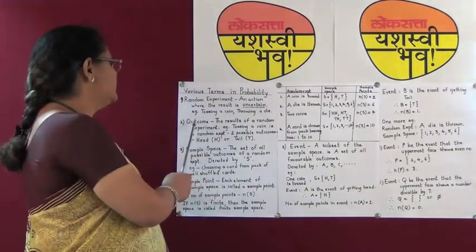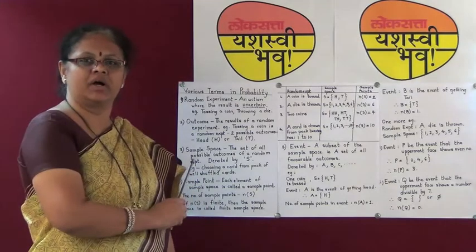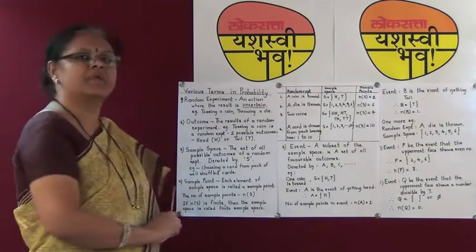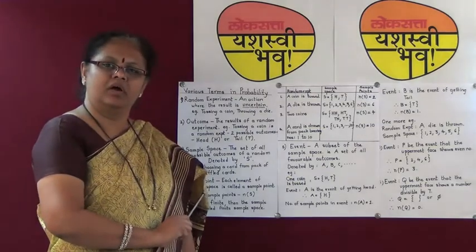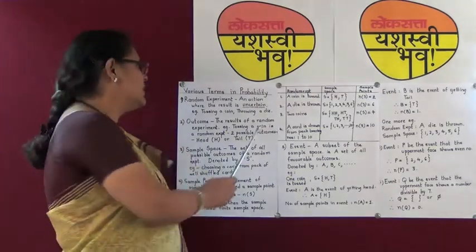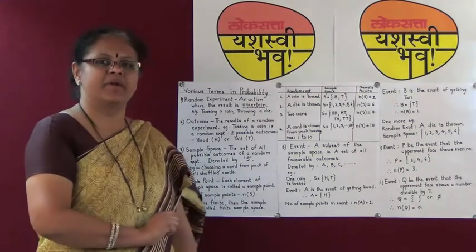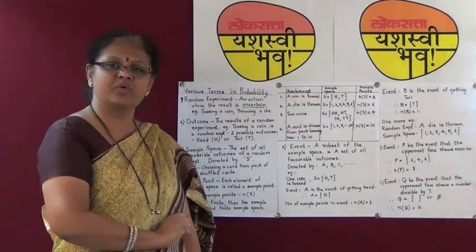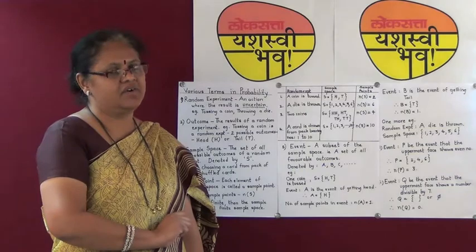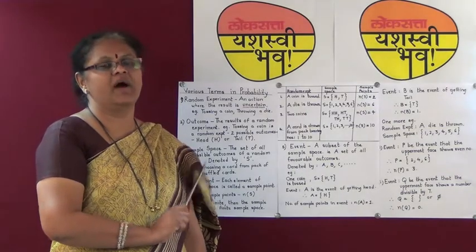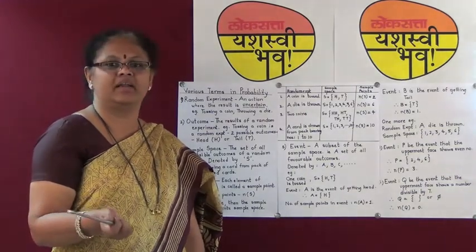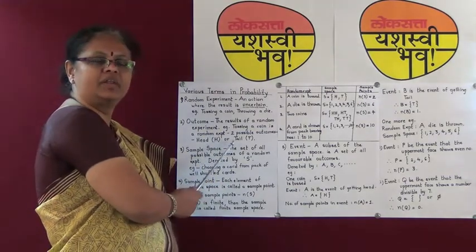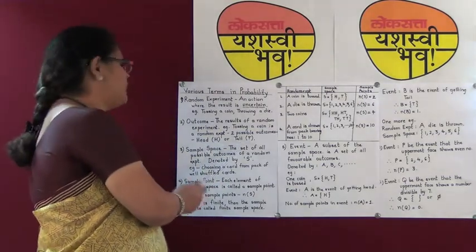Let us understand the second term in probability, that is, outcome. The result of the random experiment is termed as an outcome. Tossing a coin is a random experiment. What are our two possible outcomes? Our two possible outcomes will be either a head or a tail — the head, which is denoted by capital H, or the tail, which is denoted by capital T.